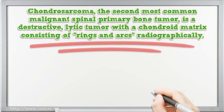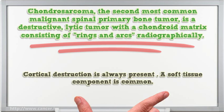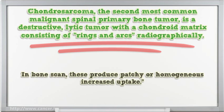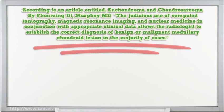Chondrosarcoma, the second most common malignant spinal primary bone tumor, is a destructive, lytic tumor with a chondroid matrix consisting of rings and arcs radiographically. Cortical destruction is always present, and a soft tissue component is common. In bone scan, these produce patchy or homogeneous increased uptake. According to an article on Chondroma and Chondrosarcoma by Fleming D.J. and Murphy M.D., the judicious use of CT, MRI, and nuclear medicine in conjunction with appropriate clinical data allows the radiologist to establish the correct diagnosis of benign or malignant medullary chondroid lesion in the majority of cases.